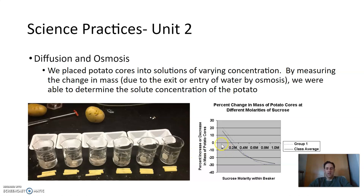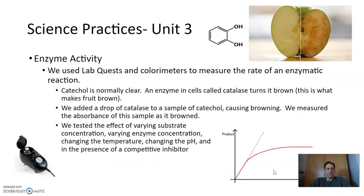We did a lab on osmosis and diffusion where we put little potato cores into different solutions, and then we measured their mass. And we saw that if we put them in pure water, they tended to gain a lot of mass. If we put them in a really sugary solution, they tended to lose a lot of mass. We did a lab on enzyme activity where we looked at the browning of apples. So we used these colorimeters and a substrate called catechol. And then we added enzyme, and we sort of got these little graphs to see the rate of reaction as the enzyme converted this clear catechol into the brown substance that you see in fruit. And then we tested the effect of different things: substrate concentration, enzyme concentration, changing temperature, changing pH, and even a competitive inhibitor.